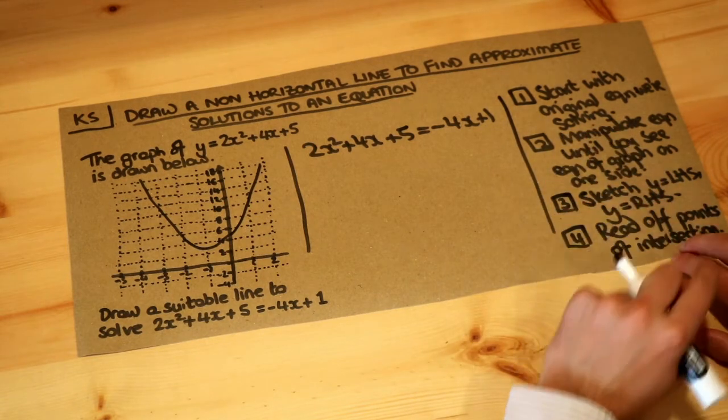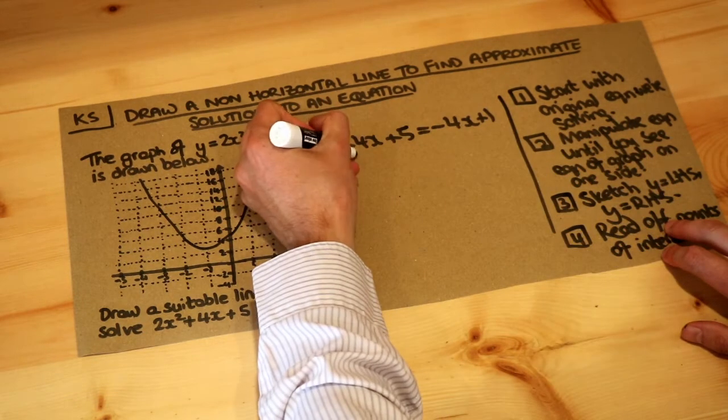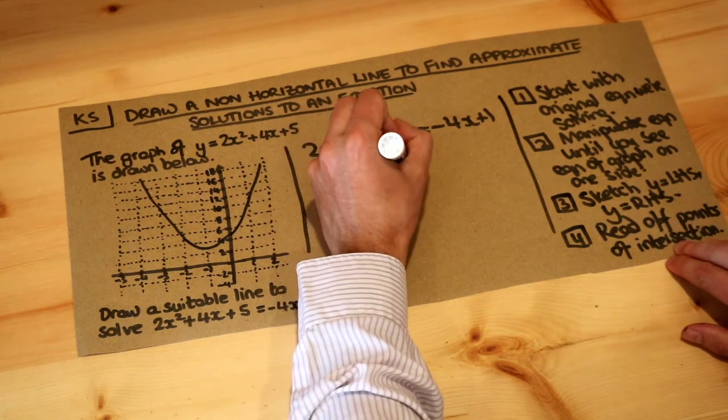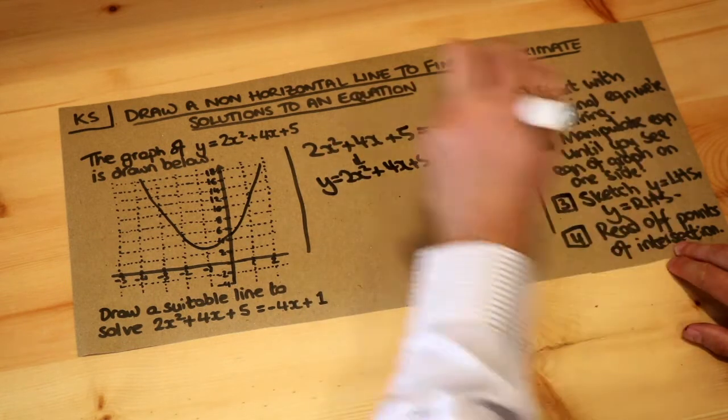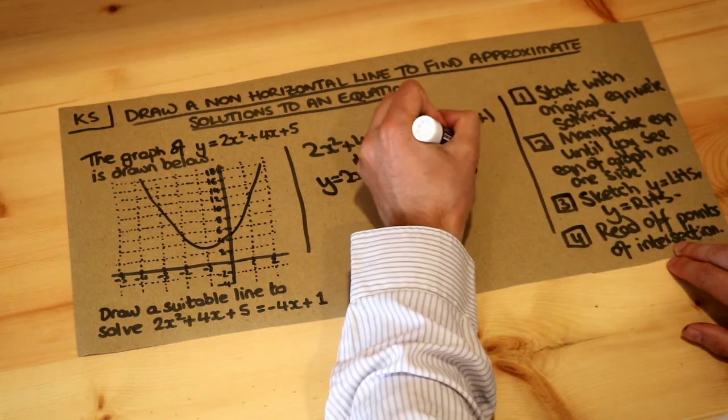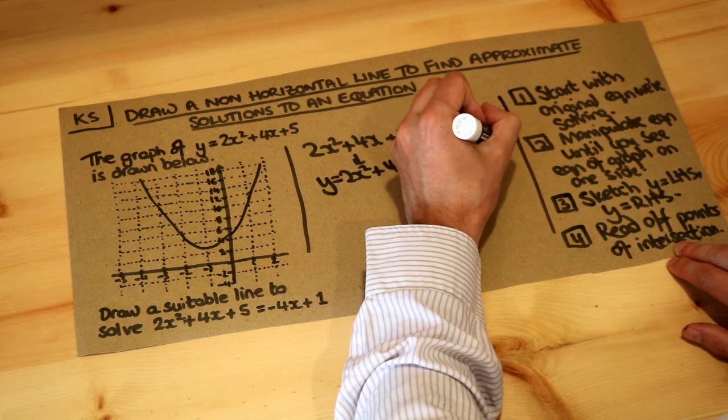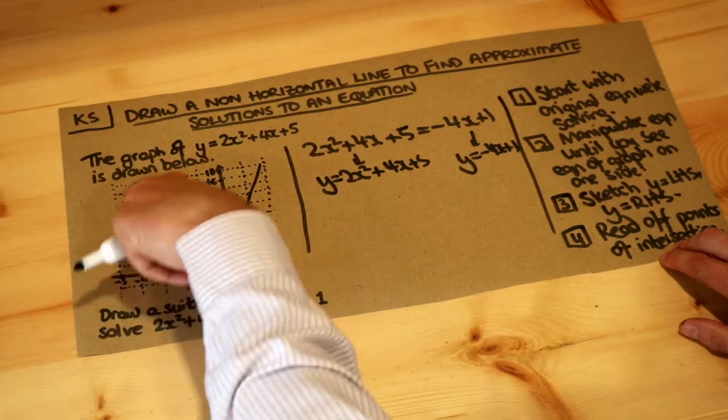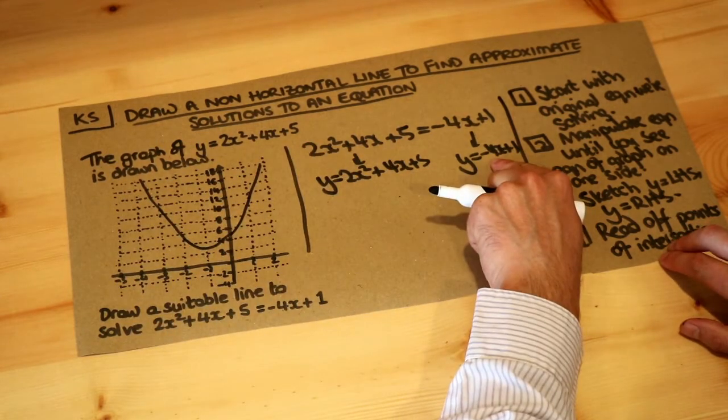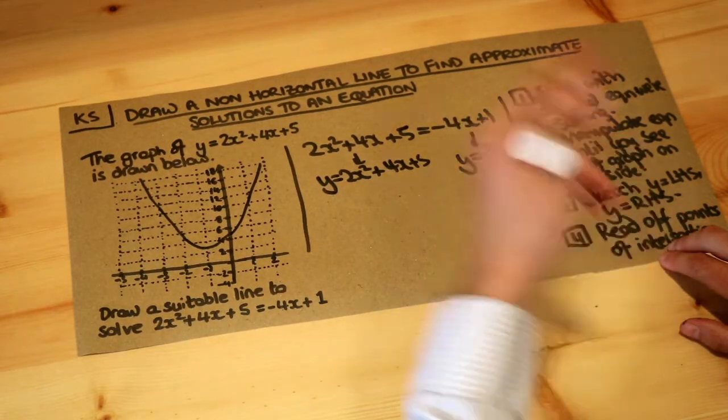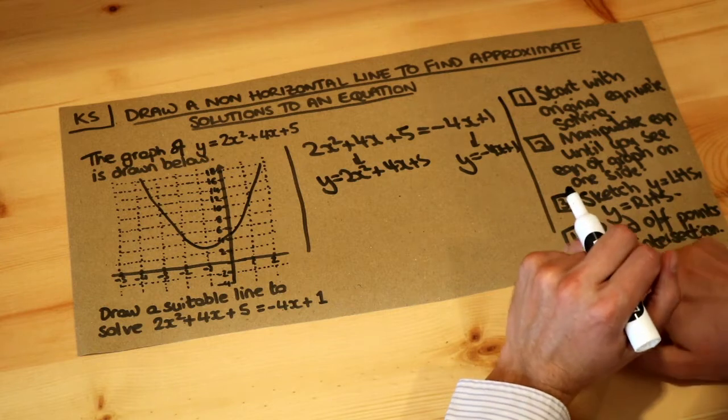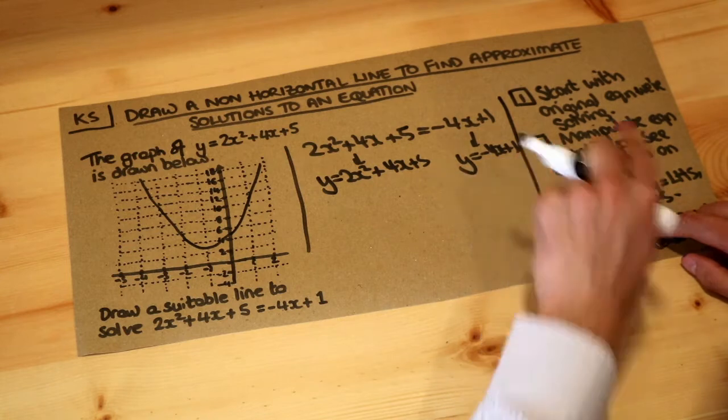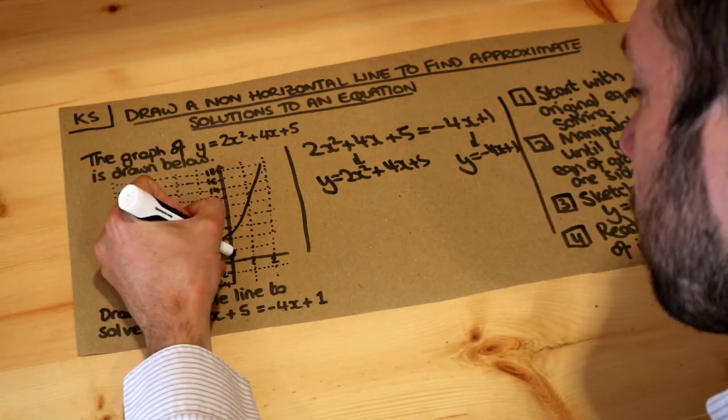For step 3, we want to sketch y equals the left hand side, so y equals 2x squared plus 4x plus 5, and y equals the right hand side, y equals minus 4x plus 1. We've already got a sketch of y equals 2x squared plus 4x plus 5, that's this graph here. So we just need to sketch the other side, y equals minus 4x plus 1. That's a straight line equation y equals mx plus c. The c here is 1, that will be our y intercept. Let's draw that here.